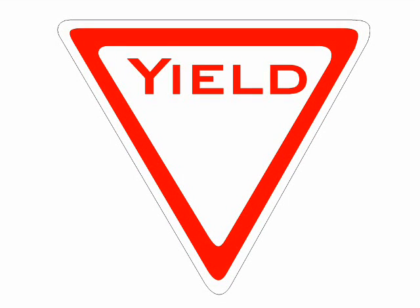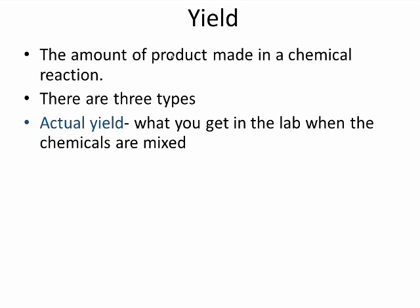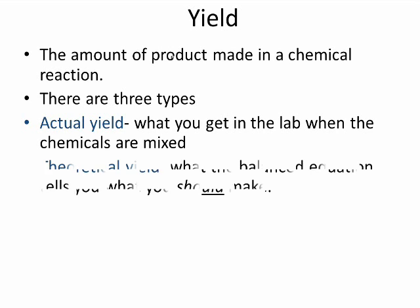Now we get to percent yield. So what is yield? Yield is the amount of product made in a chemical reaction. There are really three types. Actual yield is what you get when the chemicals are mixed — after you mix everything in the lab and your product, that's your actual yield, what you get.